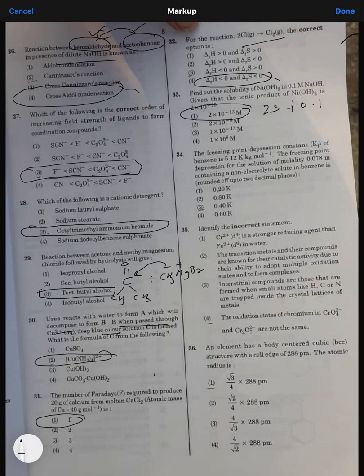Question number 34: freezing point depression constant for benzene. The formula for delta Tf is straightforward: Kf into molality. Kf value is 5.12, molality is 0.078. Multiply them together, so this is the correct statement.